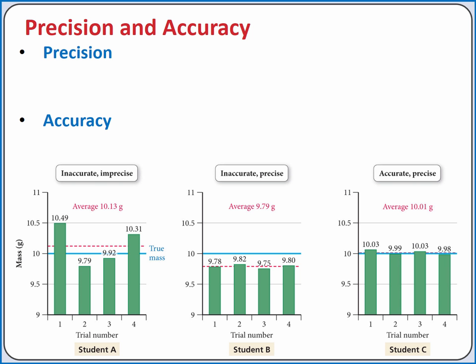When we make scientific measurements, we can also consider the precision and accuracy of our measurements. Precision is how close our measurements are to one another. Accuracy, on the other hand, is how close our measurements are to the actual value of what we're measuring.